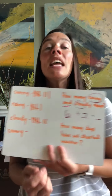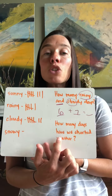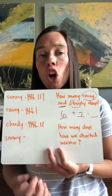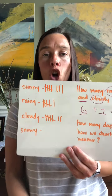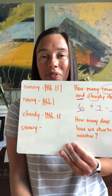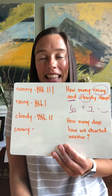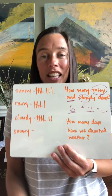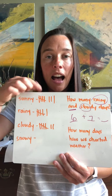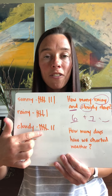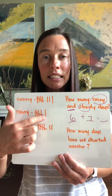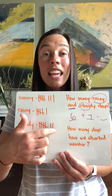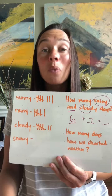Now I want you to look right here and tell me how many days have we charted weather. Are you ready? Five, ten, fifteen, sixteen, seventeen, eighteen, nineteen, twenty, twenty-one. We have charted weather 21 days. That's amazing.